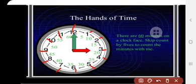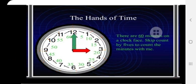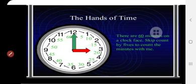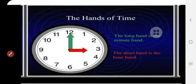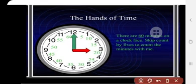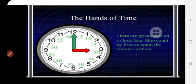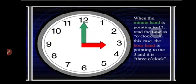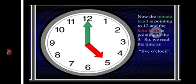1 hour is equal to how many minutes? 60 minutes. When the minute hand is pointing to 12, it tells about o'clock. So if the hour hand is pointing to 3, it is 3 o'clock. When the minute hand is pointing to 12 and the hour hand is pointing to 5, it is 5 o'clock.